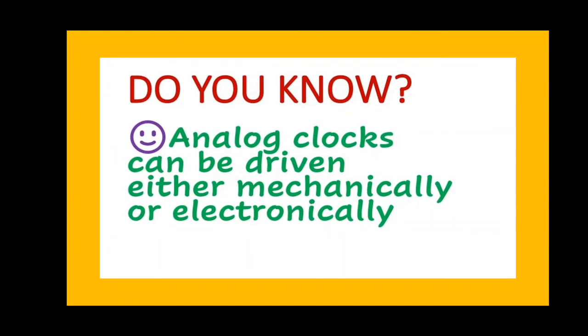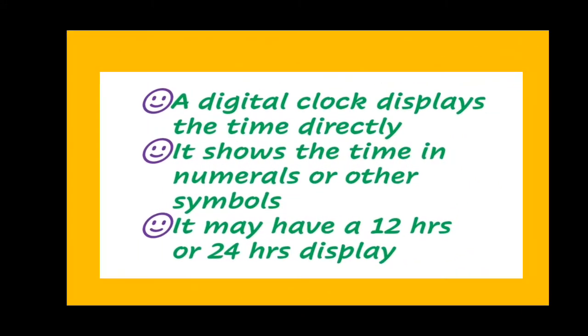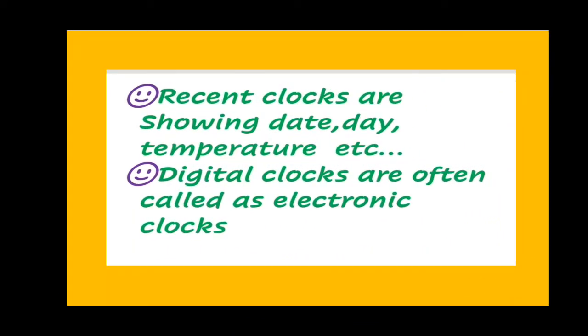See this display and say what this clock is known as. Can you guess children? Yes, you're right, these clocks are called digital clocks. It displays the time directly. It shows the time in numerals or symbols. It may have a 12-hour or 24-hour display. Recent clocks are showing date, day, temperature, etc. They are electronic clocks. They cannot be driven mechanically, so they need electrical energy for their working.